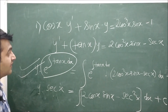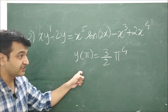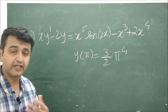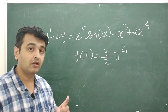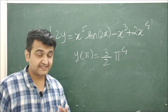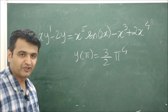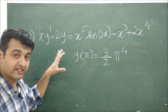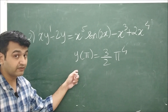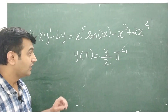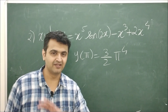For homework, solve an initial value problem containing both a differential equation and an initial condition, which gives a unique particular solution. First check whether variable separable, reduction to variable separable, exactness, or integrating factor applies; if none work, use the linear differential equation method. Rewrite in standard form, identify P and Q, use the formula, then apply the initial condition to find the constant C.